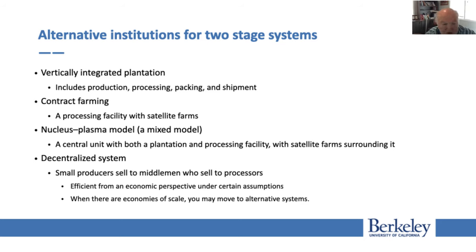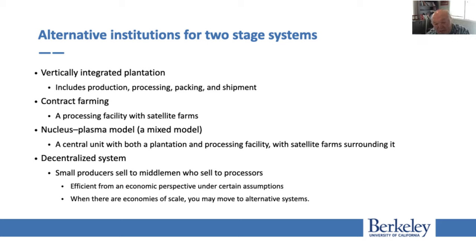There is also a mixed model called nucleus plasma, where a company has a large feedstock production base and then buys from others. For example, big wineries control a lot of land to understand how to grow wine better, then have many suppliers whom they instruct on production, and then buy and sell the wine. In other systems, like cocoa, you have many small producers, middlemen, and intermediaries that buy input from producers and sell it to the processor. Companies like Mars don't produce cocoa themselves — they buy from suppliers, produce chocolate, and sell it to consumers.